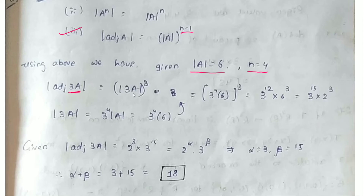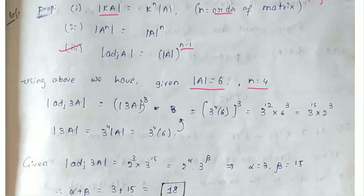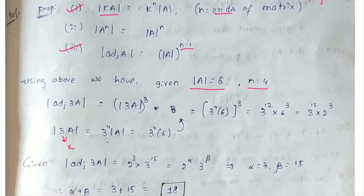We use n minus 1 with n equal to 4. To find determinant of 3A, we apply the first property: determinant of k times A equals k to the power n into determinant of A. So determinant of 3A equals 3 to the power 4 into determinant of A. Since determinant of A equals 6, we get 3 to the power 4 into 6.